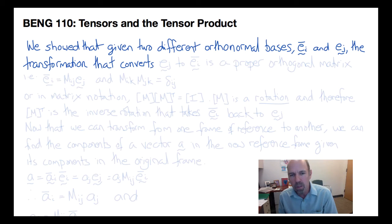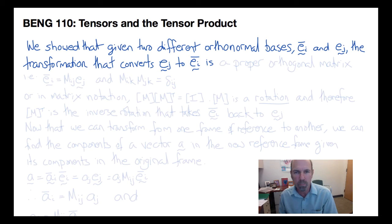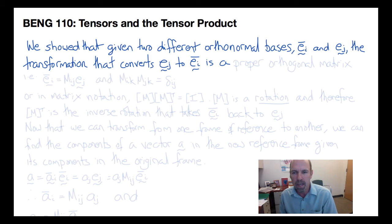We further showed that given these two frames of reference are orthonormal — both Cartesian with unit orthogonal base vectors and both having the same handedness — then the transformation from EJ to EI_bar would be a proper orthogonal matrix. In other words, it would be a rotation.